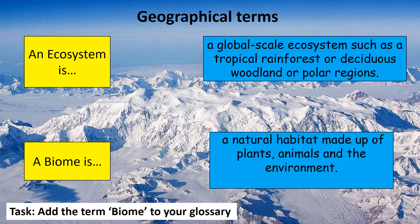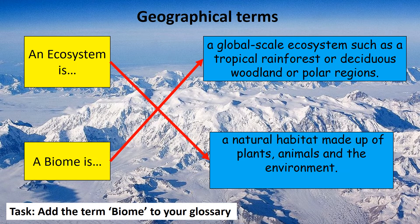Geographical terms: last lesson you created a definition for an ecosystem, so today we need to create a definition for a biome. Add this definition to your glossary that you made last lesson. A biome is a global scale ecosystem, such as a tropical rainforest, deciduous woodland, or polar regions.